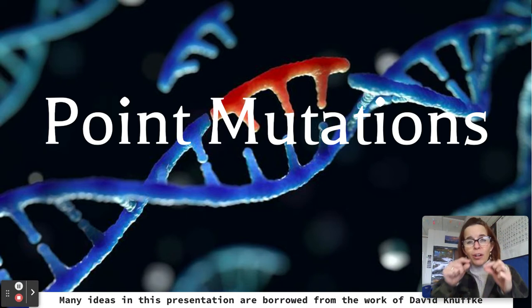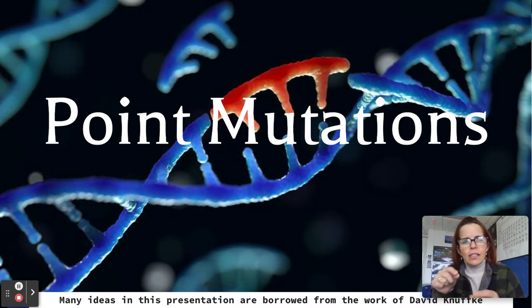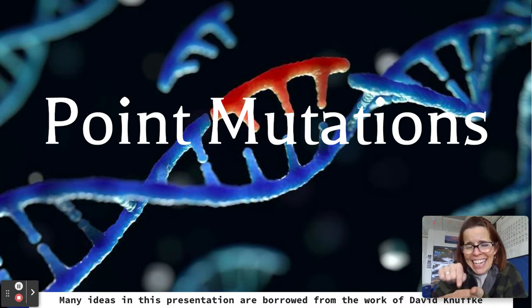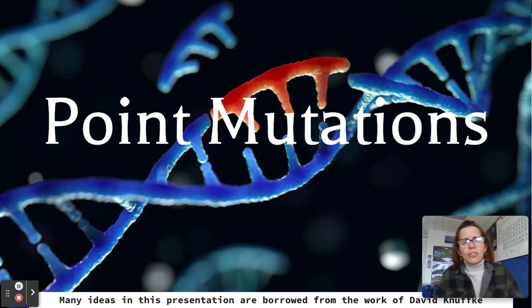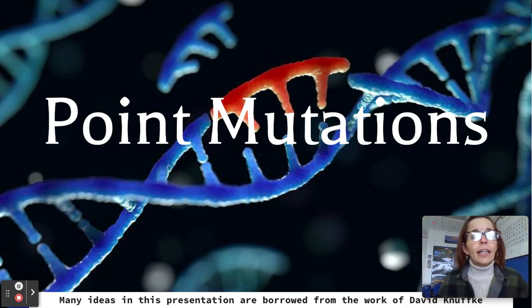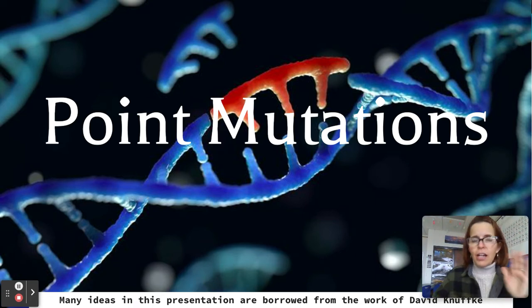Point mutations are more about the A's, T's, C's, and G's. When I say point, I'm talking about a tiny, tiny little section of a chromosome. You could not see it when you looked at a karyotype — it would not be obvious.